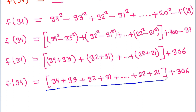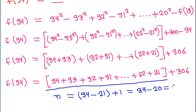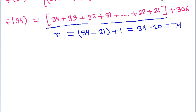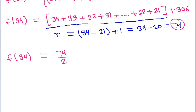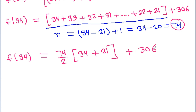And this is in an AP, so the number of terms n will be equal to 94 minus 20, that will be 74. So f(94) will be equal to the sum of the AP with 74 terms, which is 37 times (94 plus 93 plus the paired sums) plus 306.